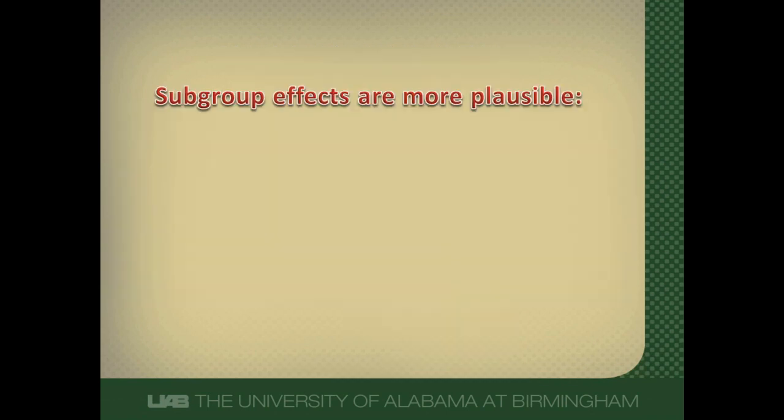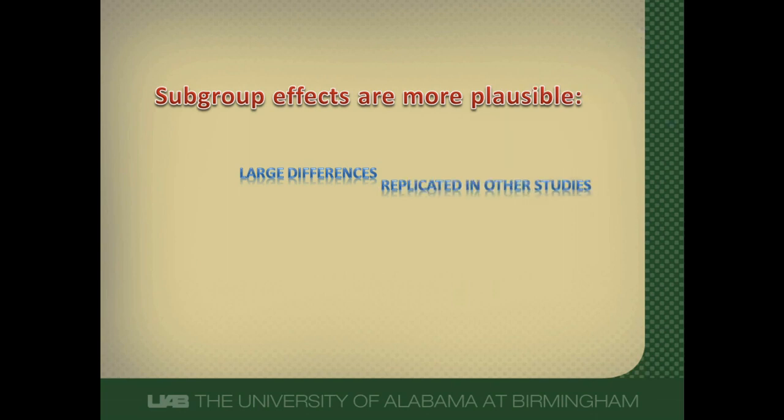We can also believe subgroup effects if they're very large. We're trying to be sure that our subgroup effect is real and not a false positive finding. The bigger the subgroup effect, the more likely it is real. If there are other studies that show the same subgroup effect, it becomes a little bit more believable because we keep seeing a consistent finding.